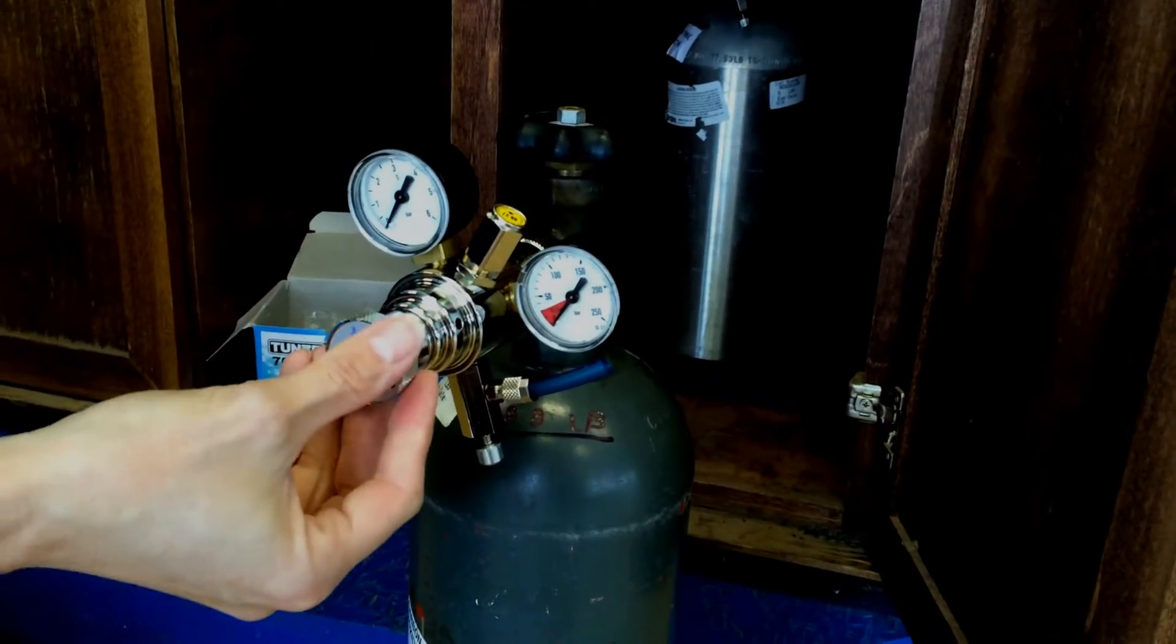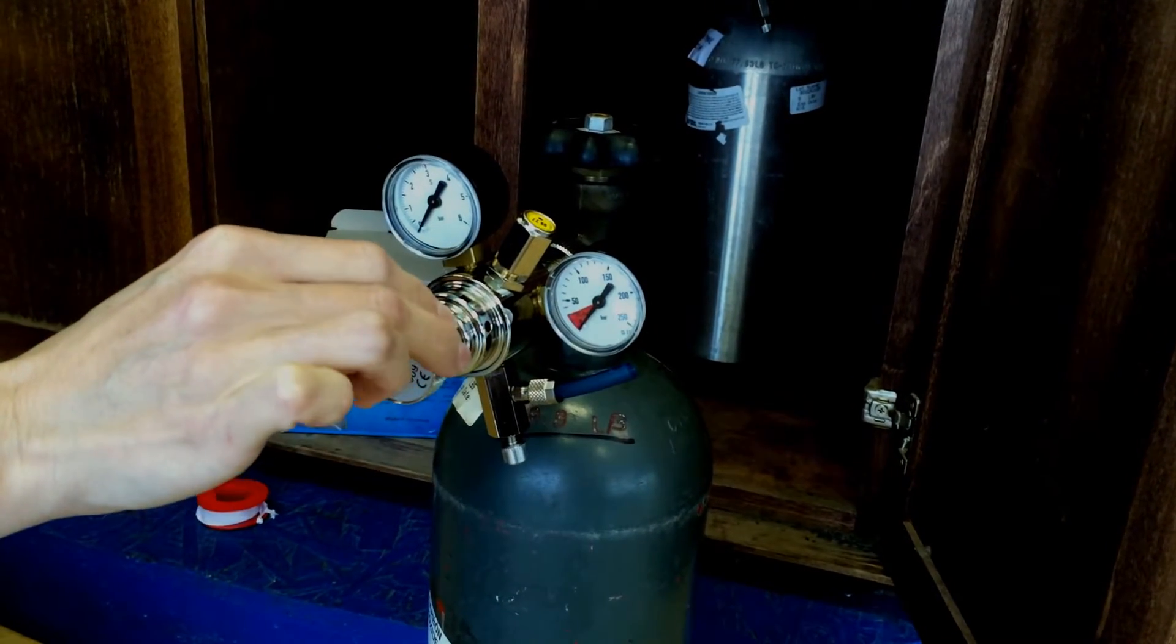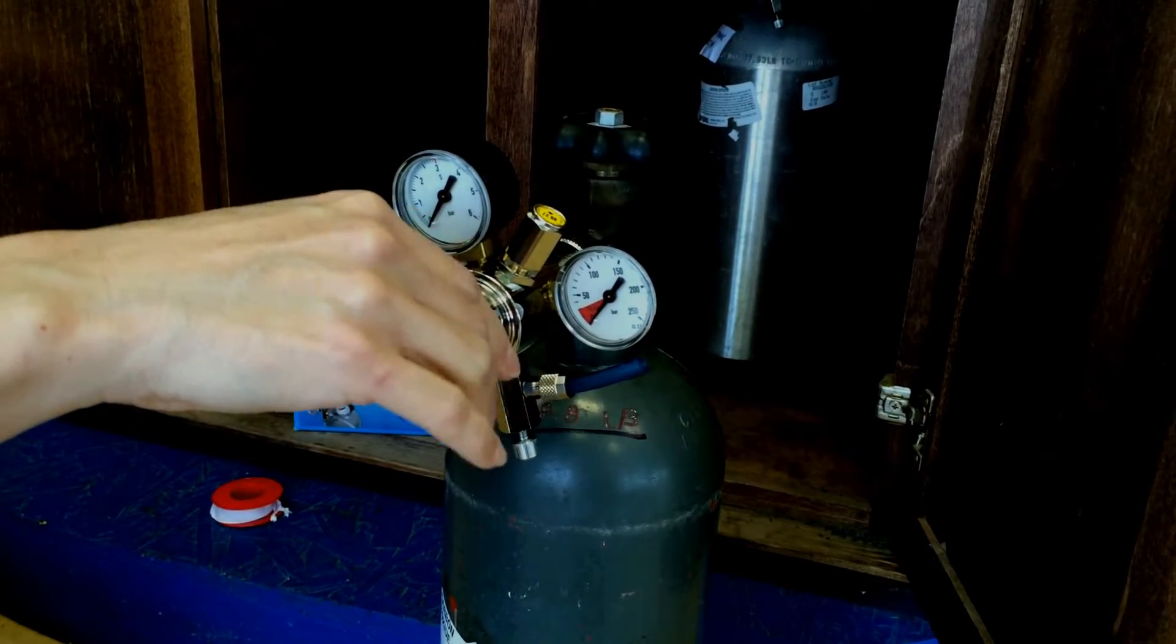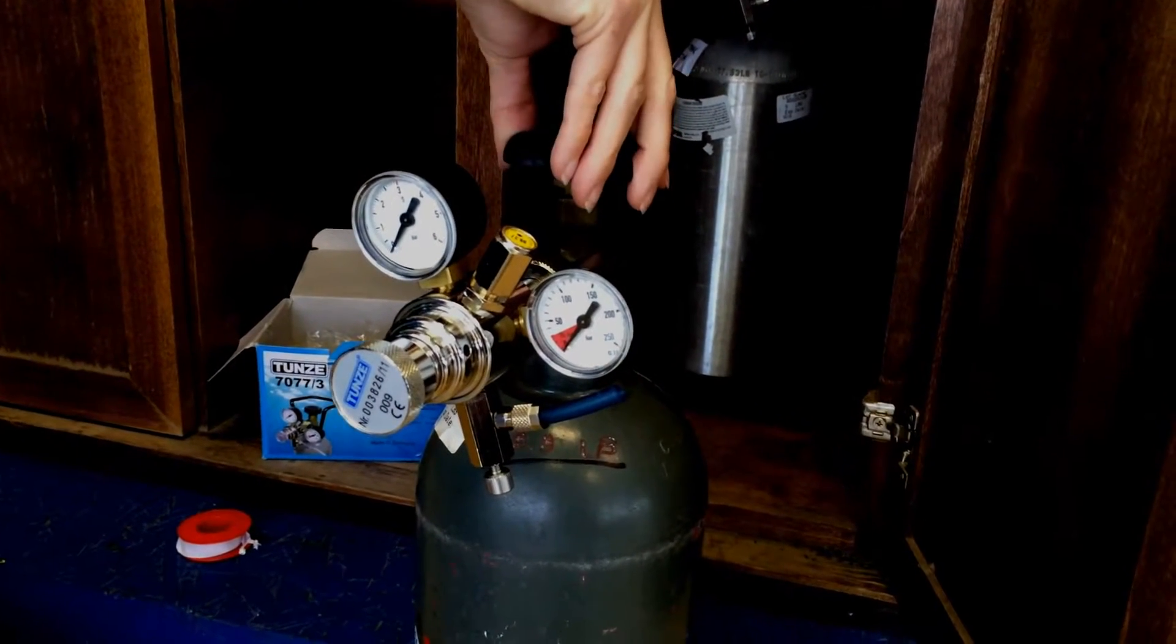You're going to want to make sure that before you put this on, this is going to be opened up all the way. Now, this front pressure valve is opposite of normal valves in the US here. After this is on, you're going to open up your CO2 tank valve.